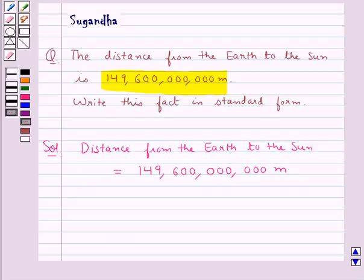We need to write this in standard form. Now there are total 12 digits in this number. We put a decimal after the digit 1 and write 496 after the decimal multiplied by 10 to the power 11, since there would be 11 digits after the decimal.